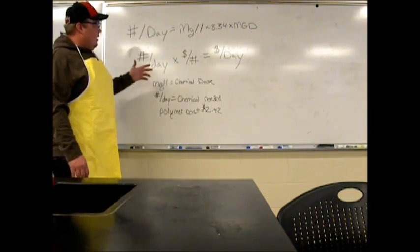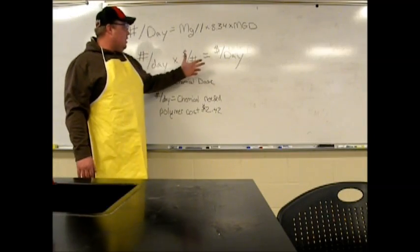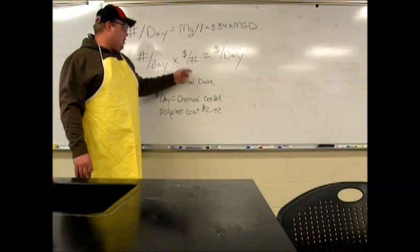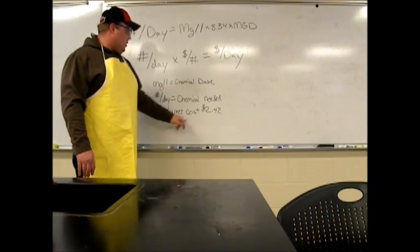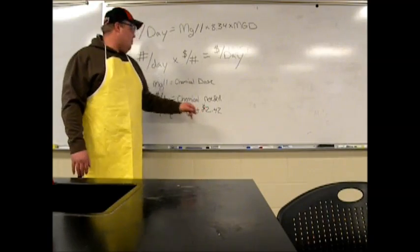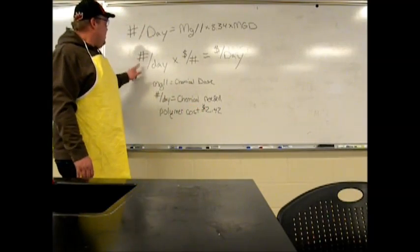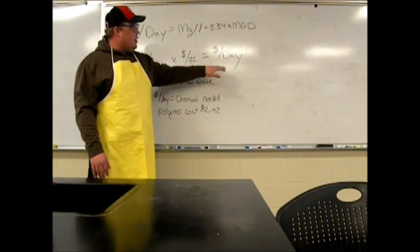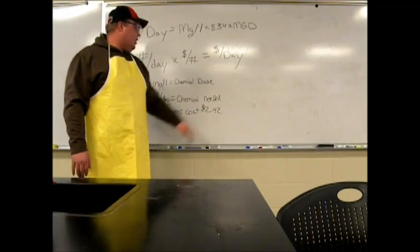And then to figure out how much this will cost you, you do cost per pound — polymer costs roughly $2.42 per pound. You take your total pounds per day, and that will give you your total daily cost.